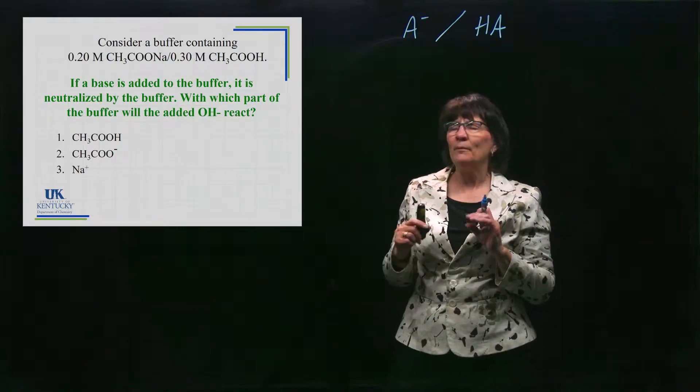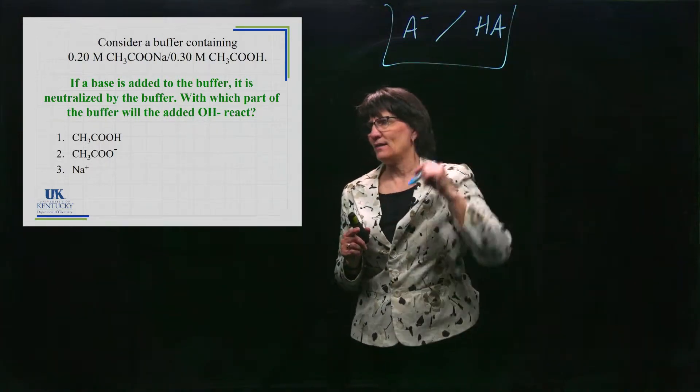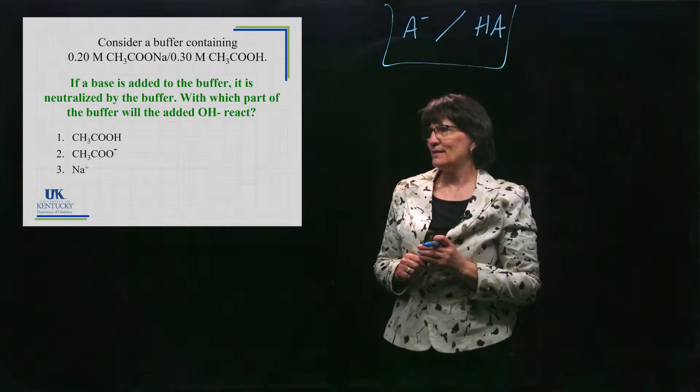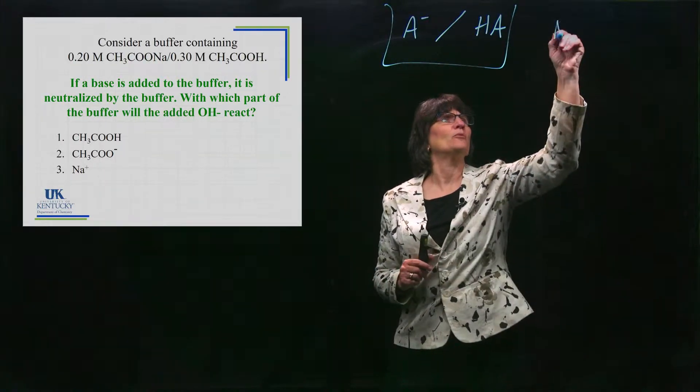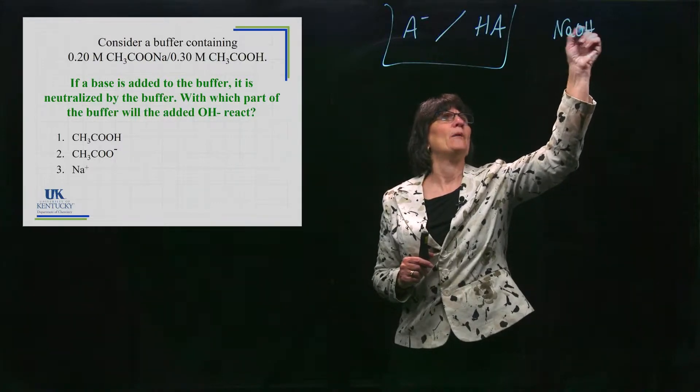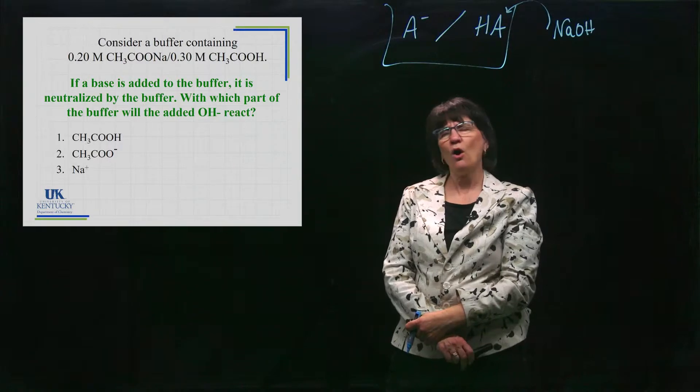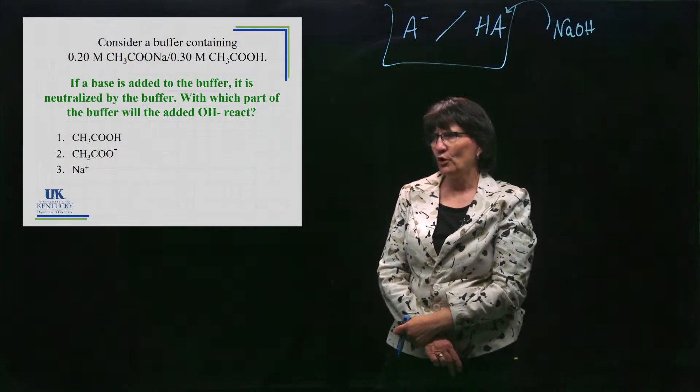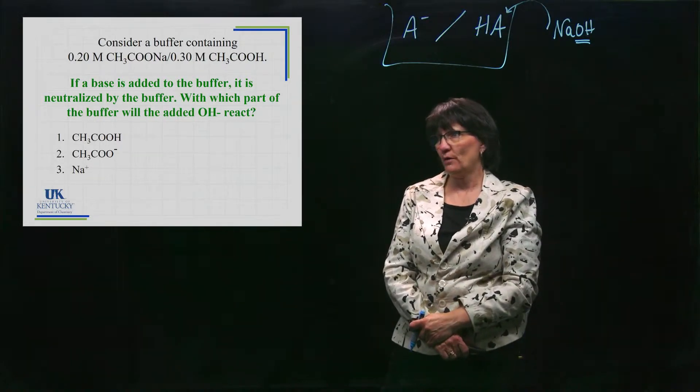We have this mixture of the weak base and its conjugate acid in there. We take this solution, this is all sitting inside of a beaker, and we dump into that solution some base. We're going to bring some sodium hydroxide, for example, and we're going to dump that into this solution. Which part of that buffer will the added OH- react with?